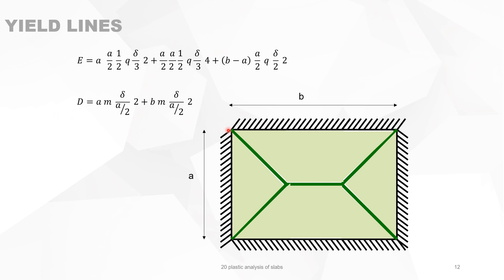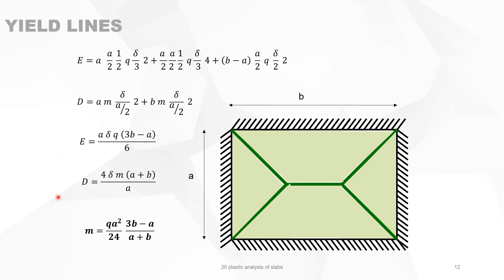For D, we have the bending moment M projected onto rotation axis A (length A) times theta, which is delta divided by A over 2. Then we also have M projected onto rotation axis B (length B) times delta divided by A over 2, and this appears twice as well. Simplifying, setting E equal to D and solving for M, we get a formula giving the bending moment in both x and y directions equal to qA squared over 24 times a geometric term.